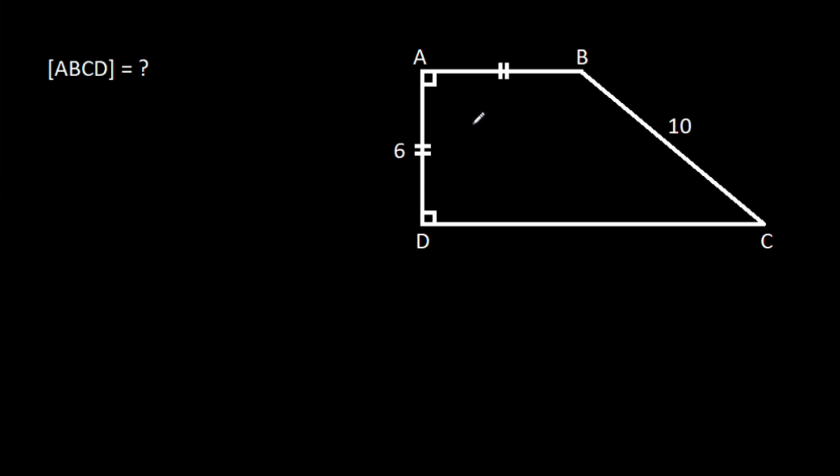In this video, we have been given that AB is equal to AD and AD is 6, BC is 10 and angle BAD is 90 degrees, angle ADC is 90 degrees. Then, we have to find area of ABCD.